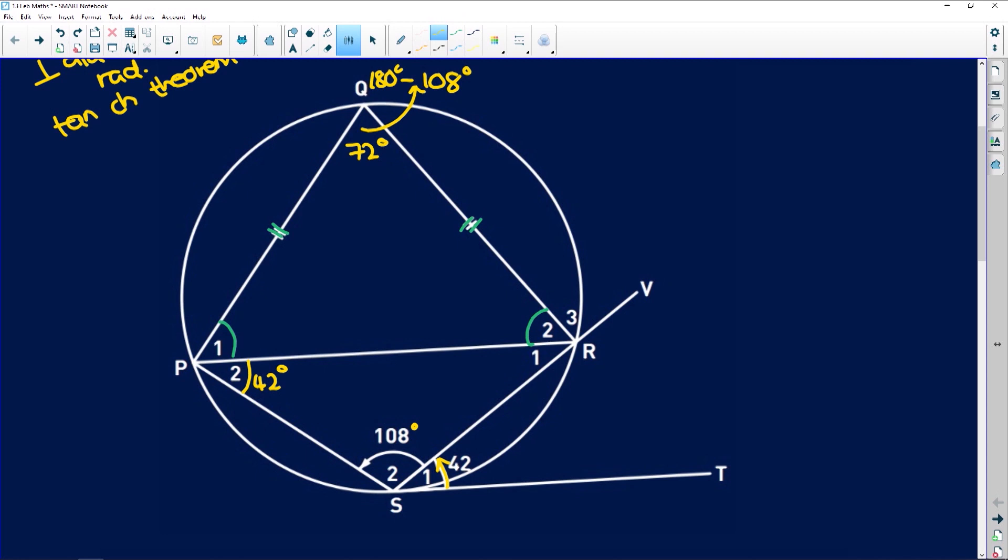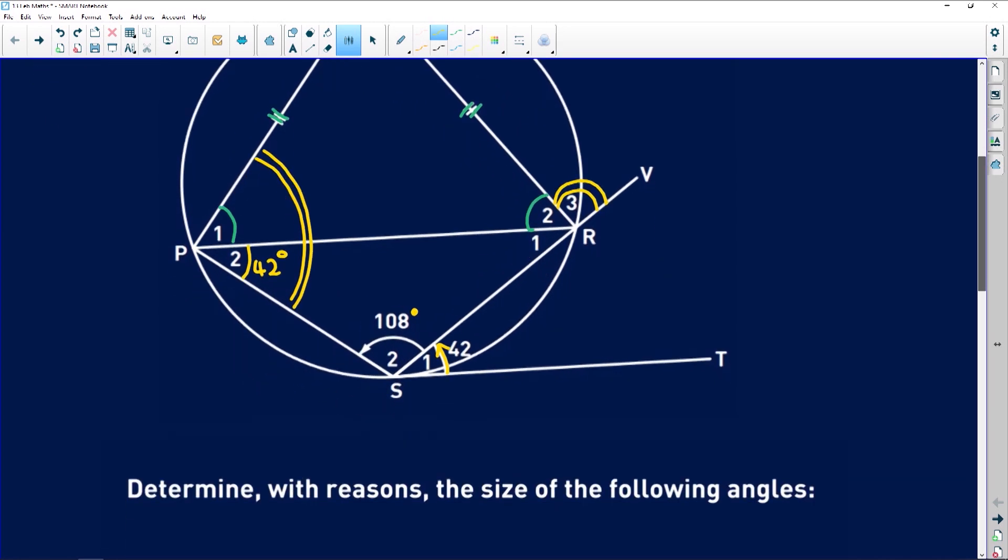And lastly, with our cyclic quad, this exterior angle here. Okay. V3 is equal to the interior opposite angle, this whole angle over here. Okay. So, now let's move on to our questions.